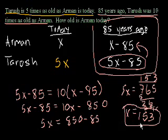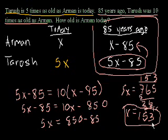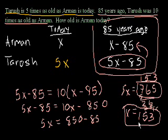So we get the solution that Armand is 153 years old today. Let's see if that makes sense. If Armand is 153, then Tharoosh is 5 times 153, so Tharoosh is actually 765 years old — we should call him Methuselah! So Tharoosh is 765 years old, and if we go 85 years into the past, Tharoosh would have been 765 minus 85, and we can verify the 10 times relationship holds.